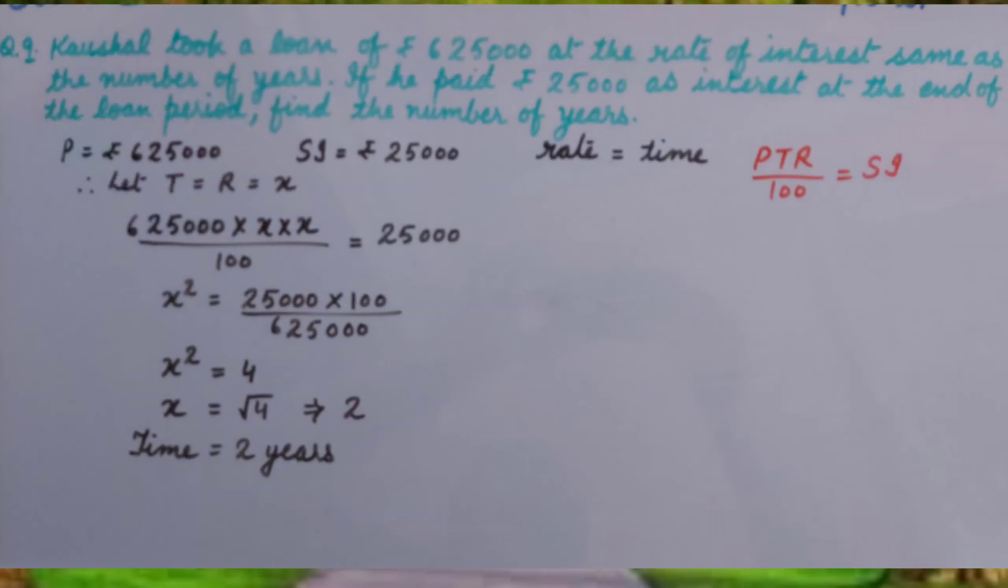In this question, principal is given as rupees 625,000, SI is rupees 25,000, and rate equals time. Therefore, we can let time equal to rate, that is equal to x. As we know SI is given, we will write the formula: SI = (P × T × R)/100. Inserting the values, we get (625,000 × x × x)/100 = 25,000.